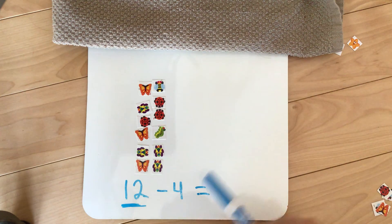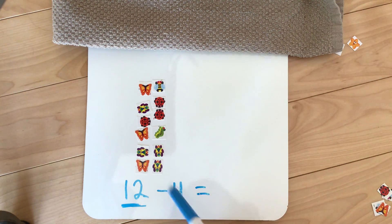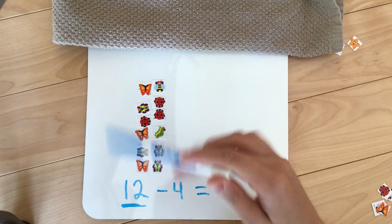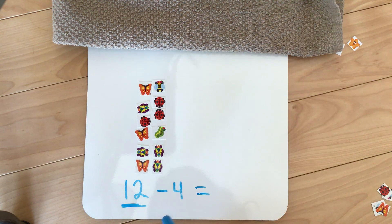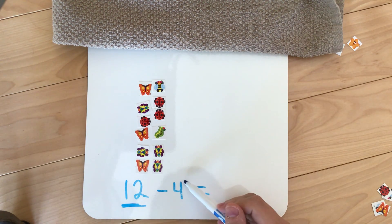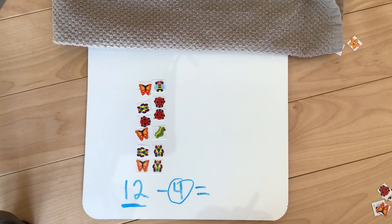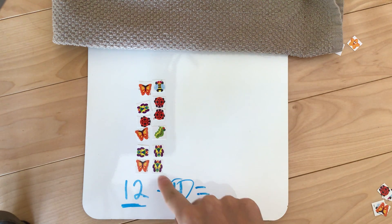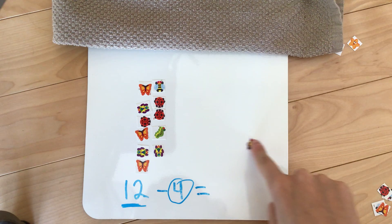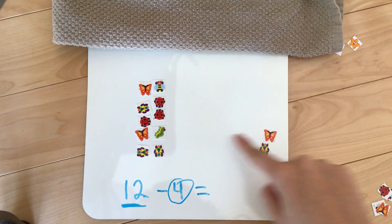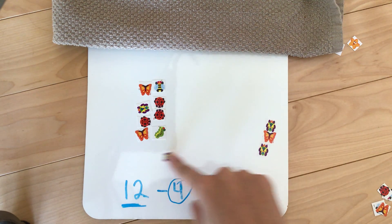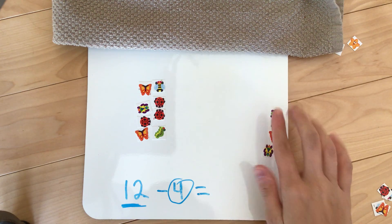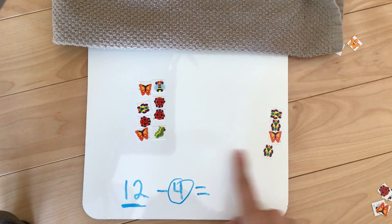And this time we're not going to be adding another pile of 4 but we're going to be taking away 4 because that's what our subtraction sign tells us to do. So I have 12 bugs right here and I'm going to choose 4 of them to take away from my big pile and we're just going to move them to the side. It doesn't matter which ones we choose, the number will still be the same. So I'll take away 1, 2, 3, 4 because our problem tells us to take away 4 from 12.